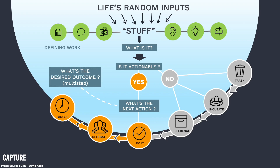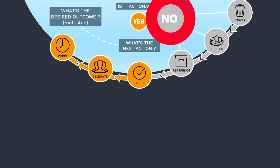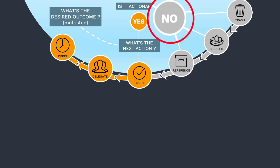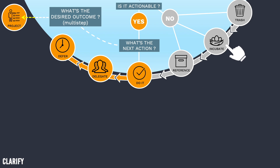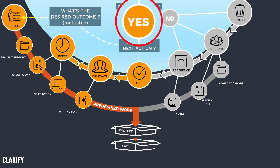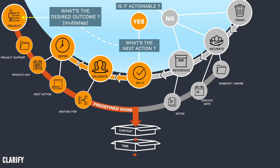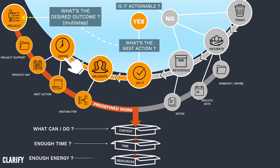So the first question you ask yourself is: is my stuff actionable? If the answer is no, it goes into one of three bins — trash, reference, or incubate. If the answer is yes, then you have an opportunity to take one of three actions: do it, delegate it, or schedule it.